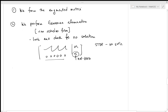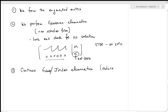Then what do you do? You have a choice. You continue changing the augmented matrix — that would be continuing with what's now called Gauss-Jordan elimination — and you end up with the reduced row echelon form. Or if you decide you don't want to do that, you stay with Gauss and back substitution. Those are your two options.